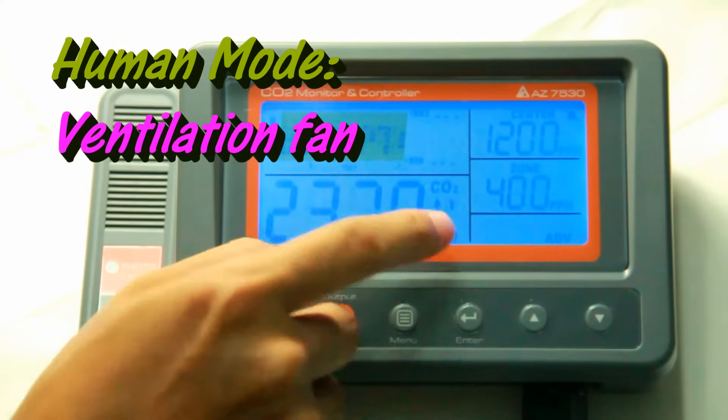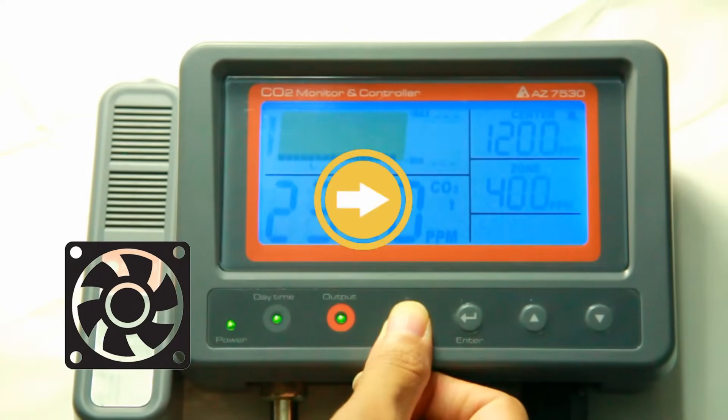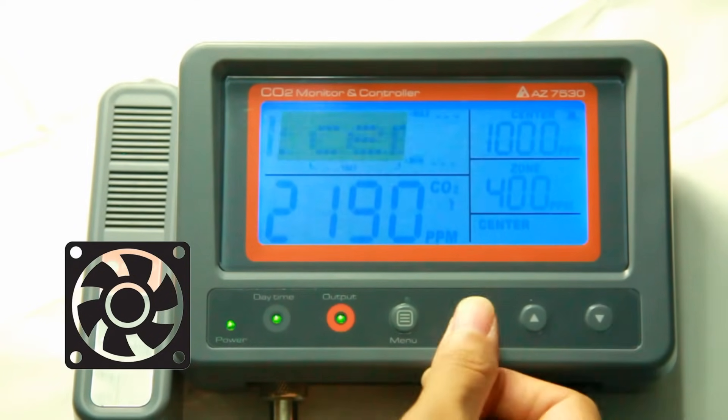Using menu, up, down and confirm keys to switch the main unit to human mode and then adjust the center and zone value to 1,400 ppm.